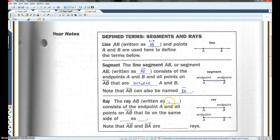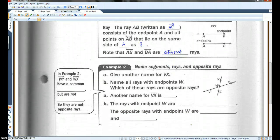Ray AB, written as, like this, consists of the endpoints A and all the points on AB that lie on the same side of A as B. Okay. So basically, from here, on and on forever in this direction. Or in this case, from here, on and on forever in this direction. Note that AB and BA are different rays. They're not the same ray. Okay.